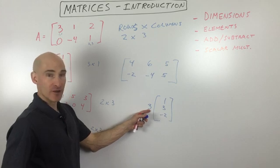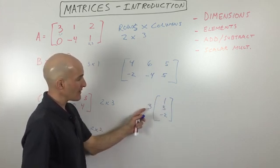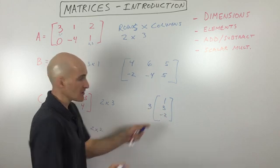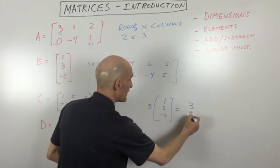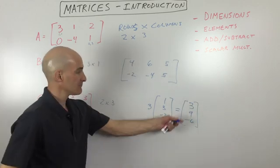By writing a three here in front of the matrix, it's just like the distributive property - you're going to multiply that three into the matrix. And what do you get? Three, nine, negative six. And that's it.